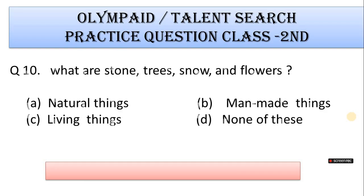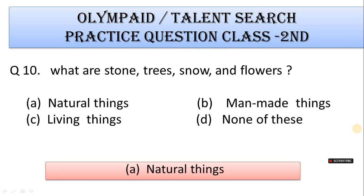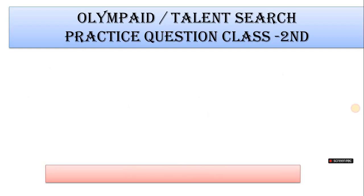Number 10: What are stone, tree, snow, and flowers? A. Natural things, B. Man-made things, C. Living things, D. None of these. Correct answer is Option A. Natural things.